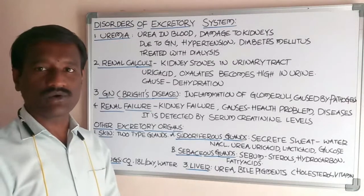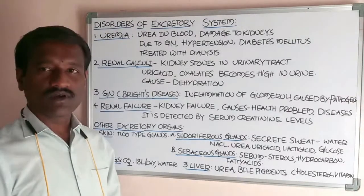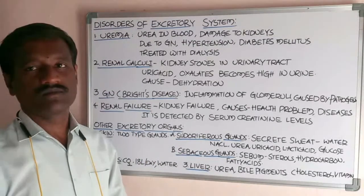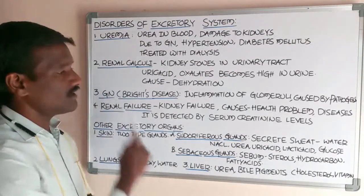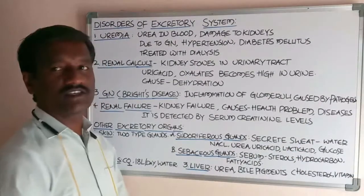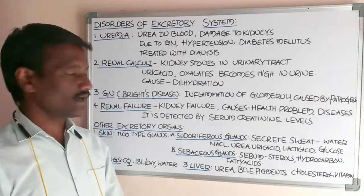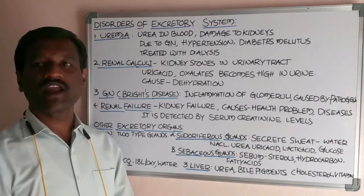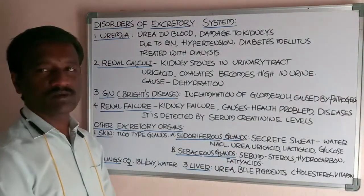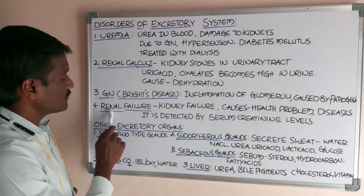The fourth disorder is renal failure, which means kidney failure — the kidney's inability to form urine or filter the blood of the individual. The causes include various health problems and diseases. This disorder is detected by elevated serum creatinine levels in the blood. A high amount of creatinine in the blood indicates renal failure.